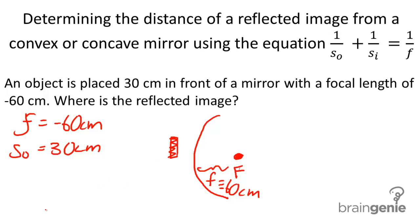And we have our equation. We're solving for the distance of the actual image. When we plug this into our equation, we get 1 over 30 plus 1 over si equals 1 over negative 60. When we solve this algebraic equation, we get si equal to negative 20 centimeters.